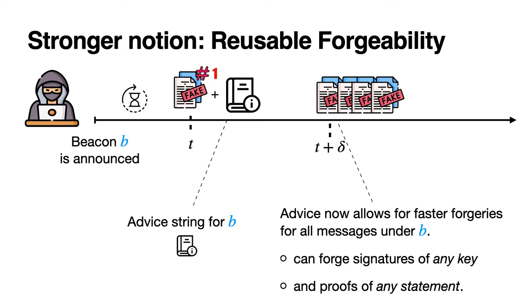This enhances deniability as every beacon value now requires just one long computation that helps produce forgeries for all other keys and statements for that beacon value.